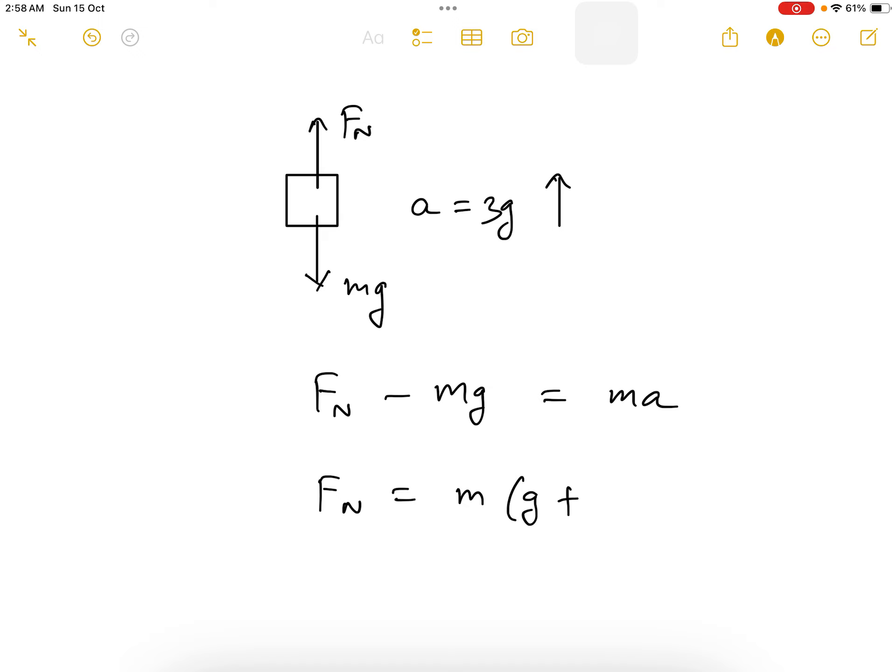Normal force is m(g + a). Since a equals 3g, we get 4mg as the normal force.